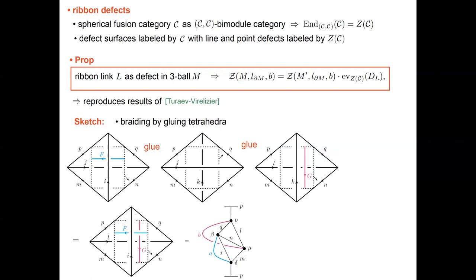Thank you for the attention. Questions from the audience: when you put the defect on the torus, is the number you get like a Verlinde-Pramc dimension for the fusion ring of the bimodule? Answer: That's a good question. I don't know in general — it sounds plausible, but I cannot say yes or no.